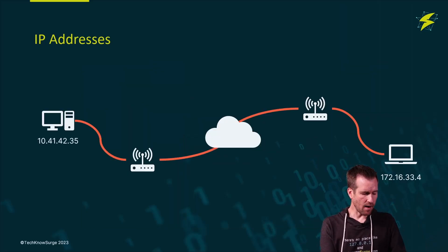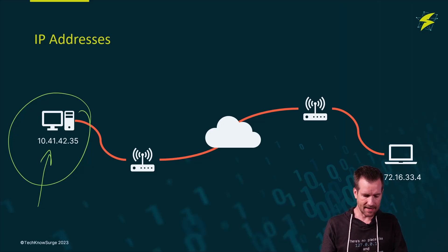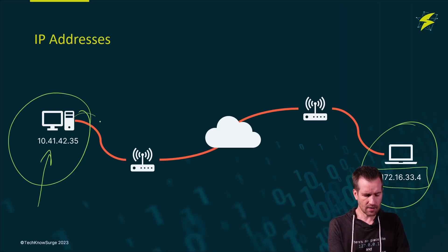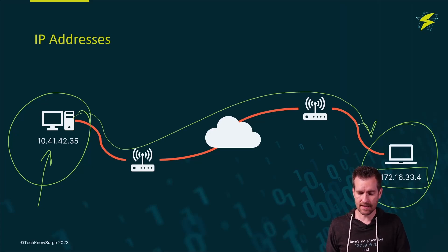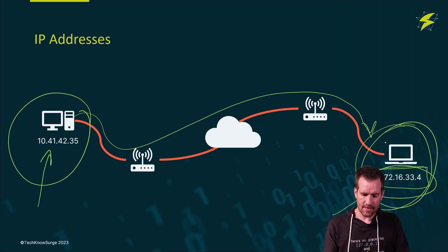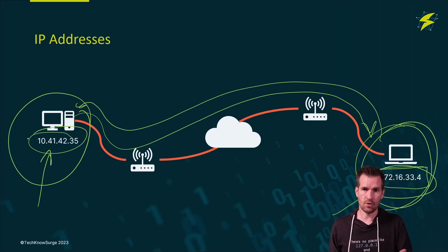Here's an example where this computer right here has an IP address of 10.41.42.35. Let's say it wants to access some sort of information that's on this laptop right here. This has an IP address as well. So traffic is actually going to be routed across the internet or whatever networks there are to this final destination. You have to know what the IP address is of that final destination, and then based off of whatever information you're requesting, that traffic will get routed back via the IP address for your computer or whatever device you're using to access that information.